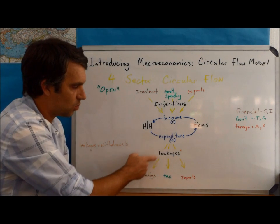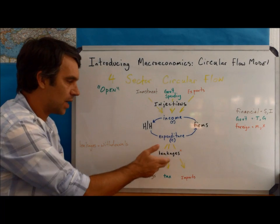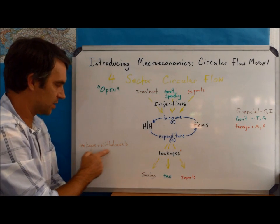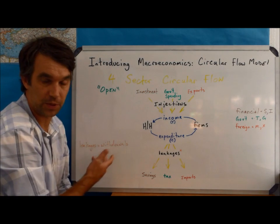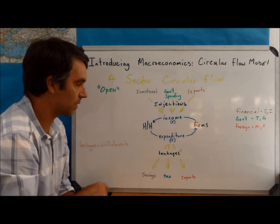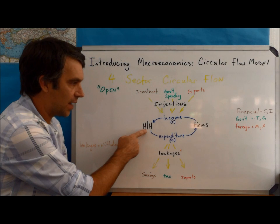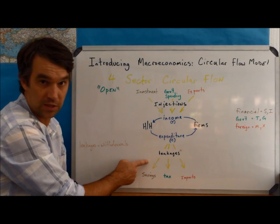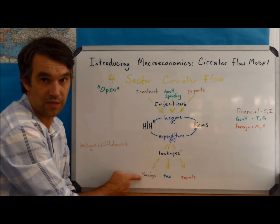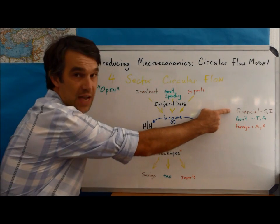Well, these are what we call our leakages. Sometimes they're called leakages, other times other books might call them a withdrawal. Both are acceptable terms, whichever one you prefer. If the households have $1,000, maybe they've chosen not to spend some of it and instead they're just going to save it. This is part of what we call the financial sector.